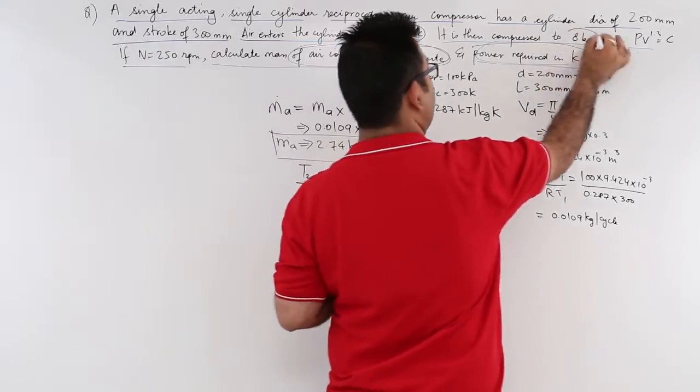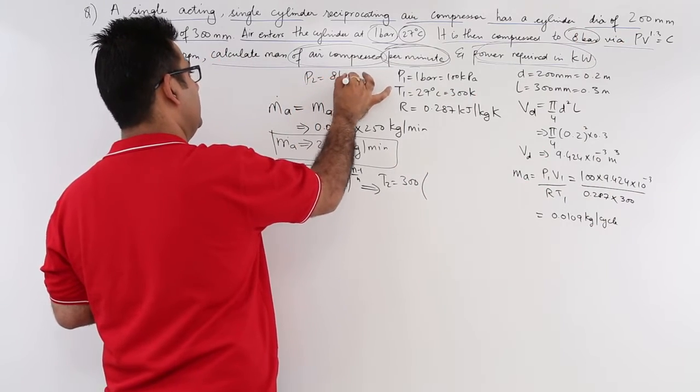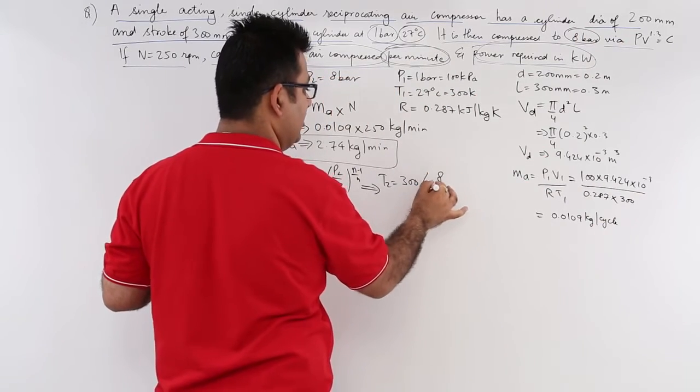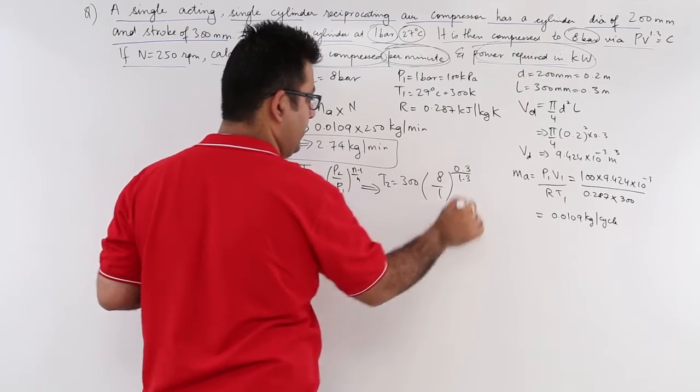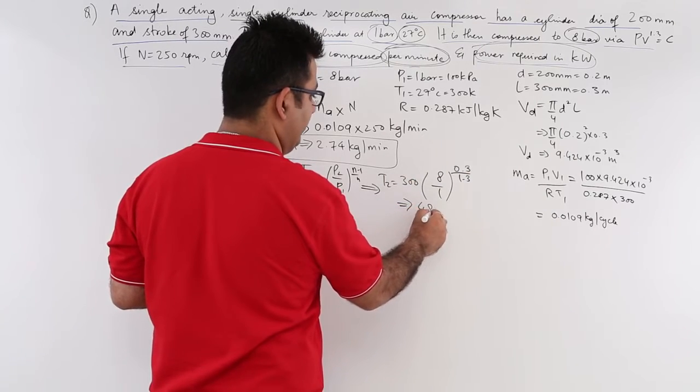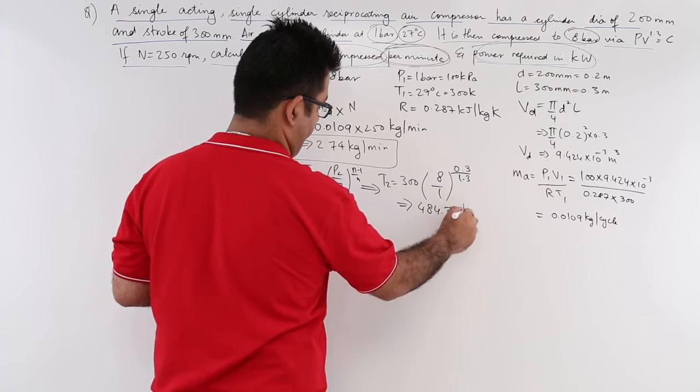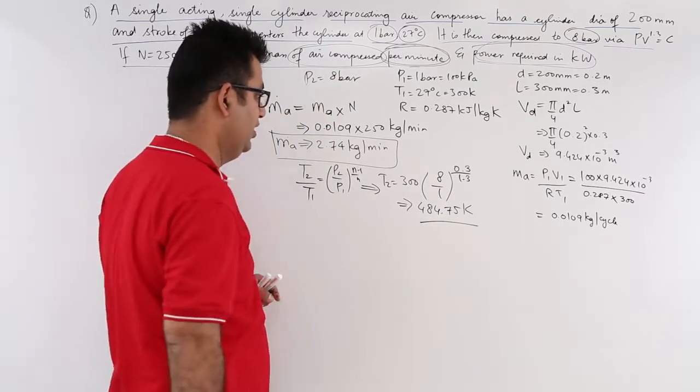From here T2 becomes T1 which is 300 into P2 is 8 bar, so this is 8 over 1, raised to 0.3 upon 1.3. So this T2 becomes around 484.75 Kelvin, almost 485.